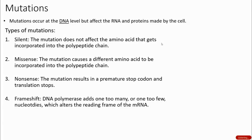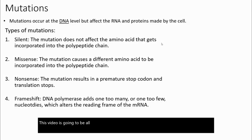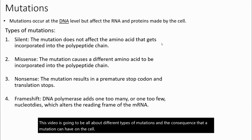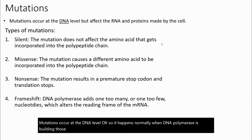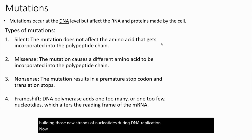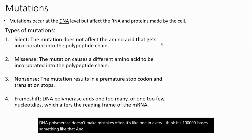This video is going to be all about different types of mutations and the consequences a mutation can have on the cell. Mutations occur at the DNA level. They happen normally when DNA polymerase is building new strands of nucleotides during DNA replication. DNA polymerase doesn't make mistakes often — it's about one in every 100,000 bases.